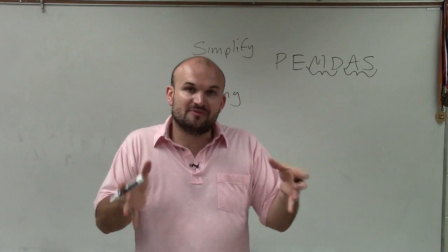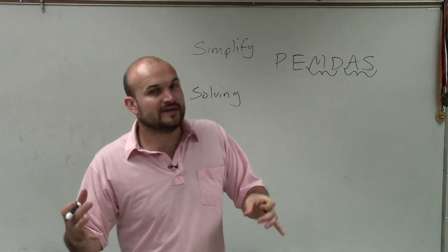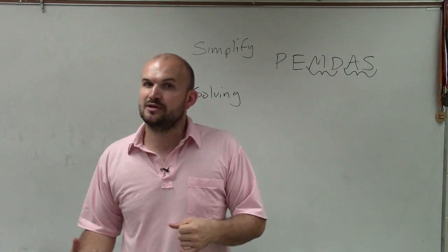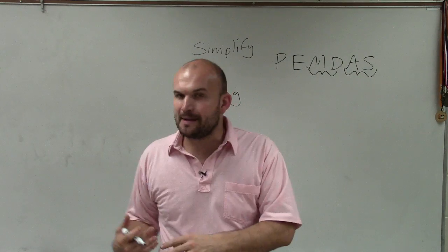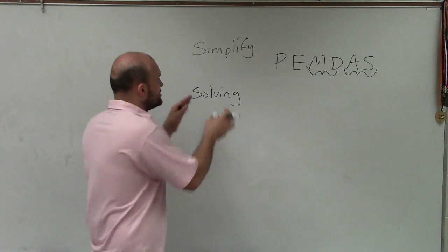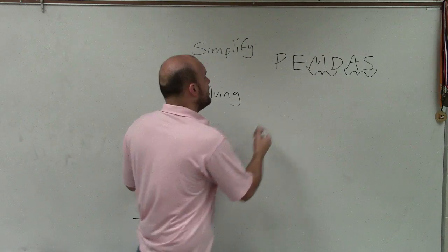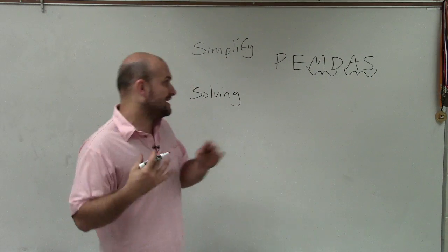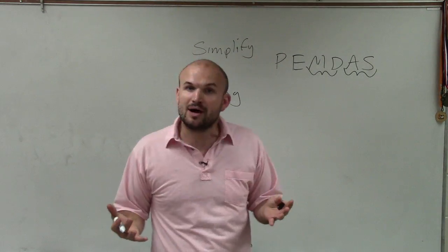But then once we get it into its simplified state, to start solving, we use inverse operations, right? So we undo what is happening. And when we're undoing using our inverse operations, we want to undo in an order. We just can't start undoing any order that we want to.